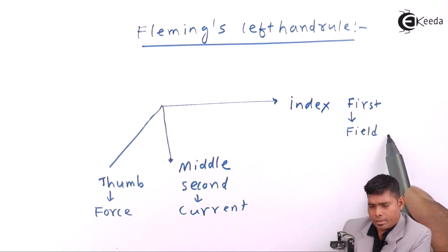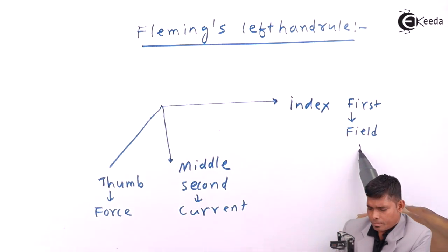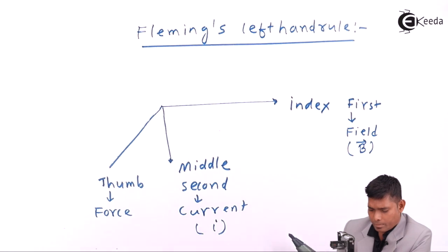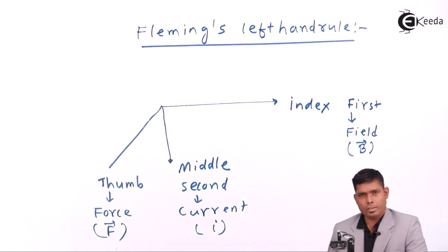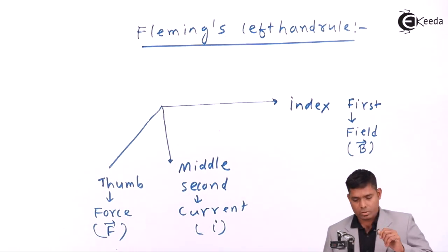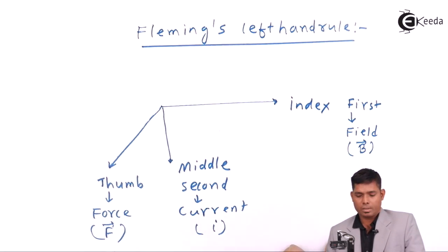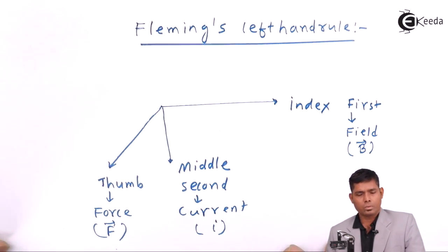The first finger must be in the direction of the field, the second finger must be in the direction of the current, and the third finger or thumb will give you the direction of the force in which the conductor will move. This is known as Fleming's left hand rule.